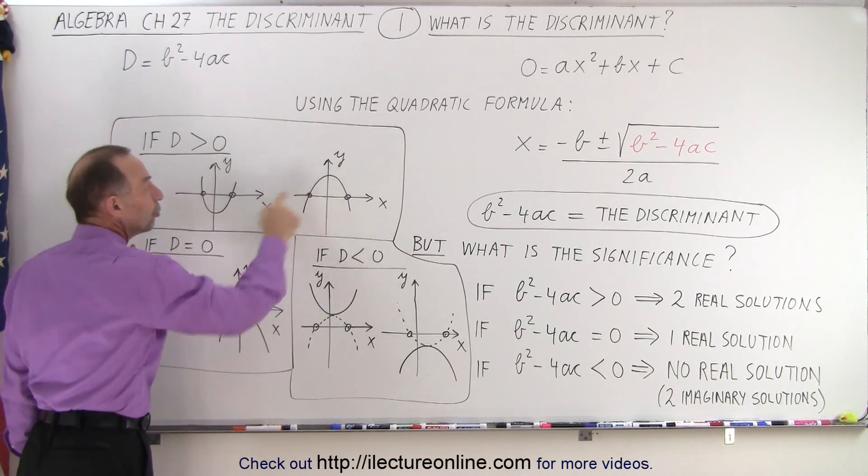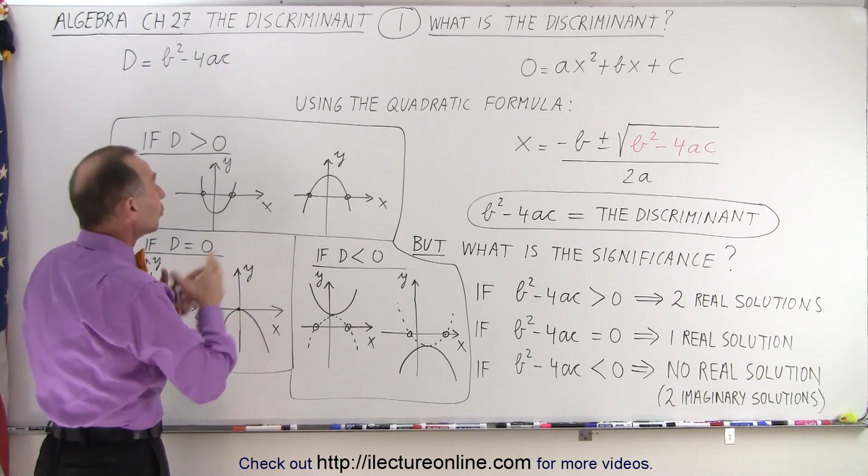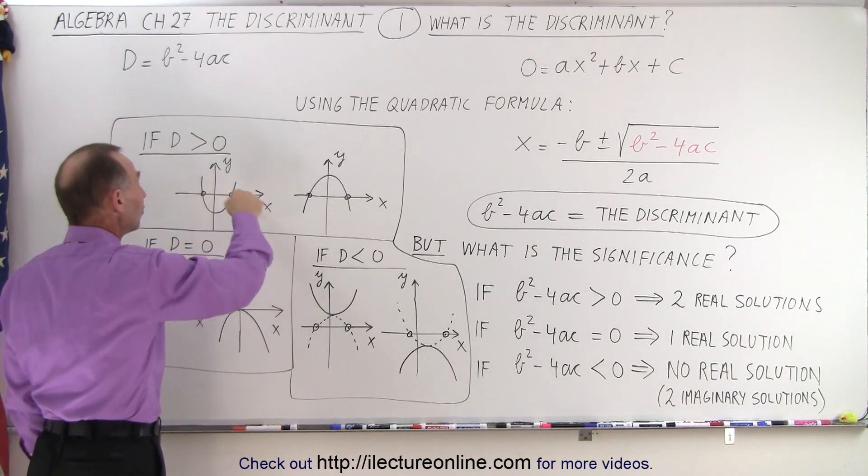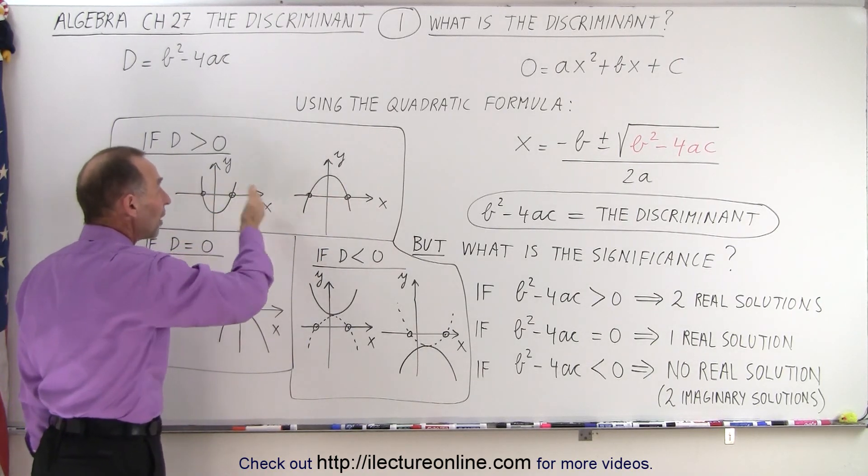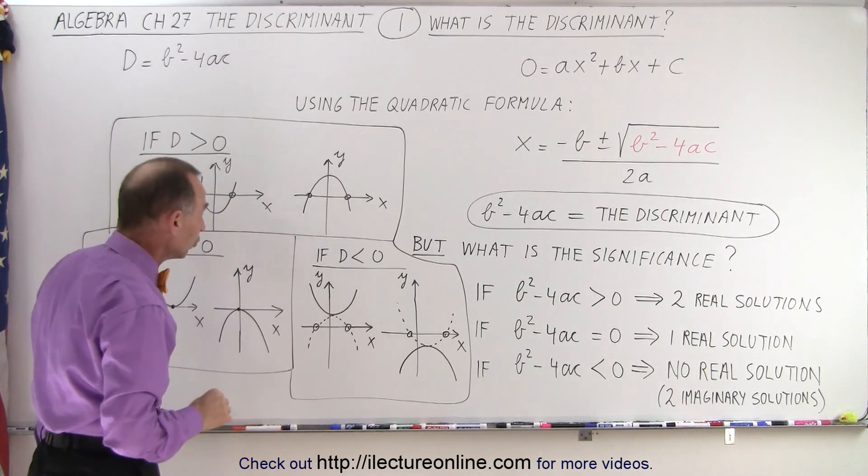Which then indicates it has two real solutions. So either looks like this or looks like this. It crosses the x-axis in two places and there's two solutions.